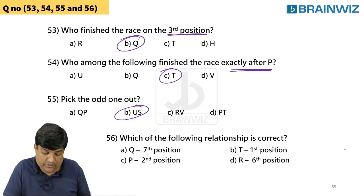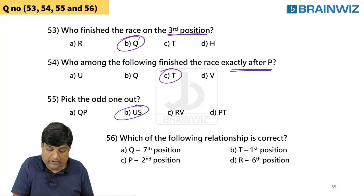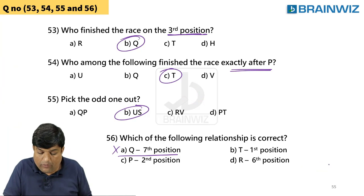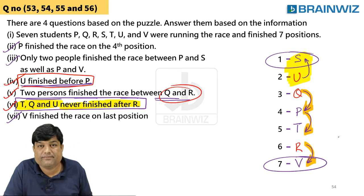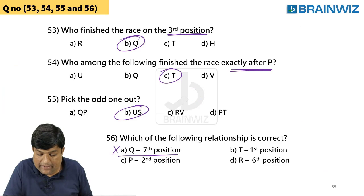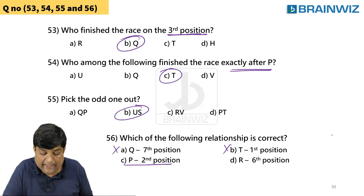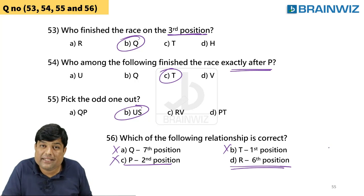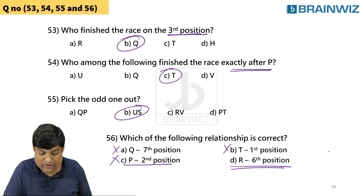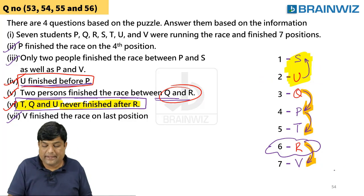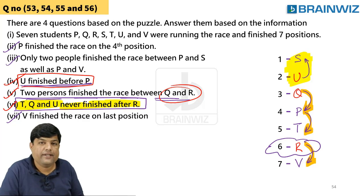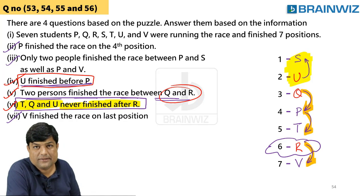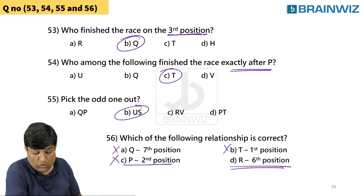Last question: which of the following is correct? Option one — Q finished on seventh position: that's wrong. Option two — T finished first position: also wrong. Option three — U is on the second position: I don't think so. Option four — R is on the sixth position. Let's check: R is on the sixth position — yes, that is correct. That is the best answer.